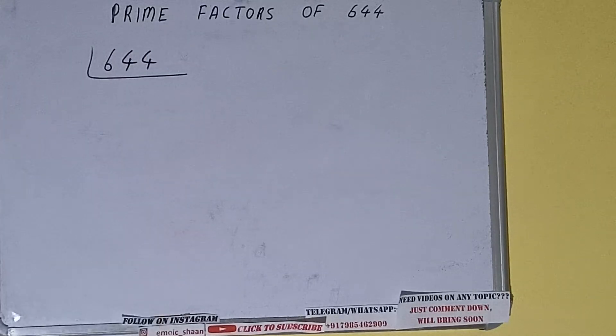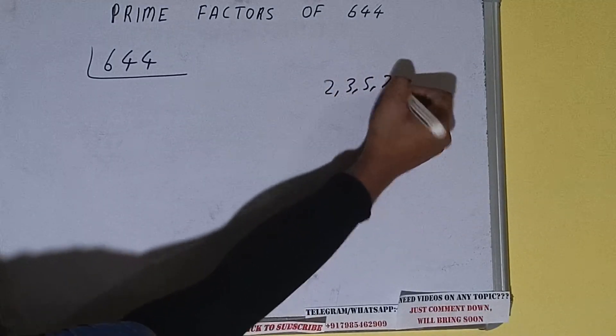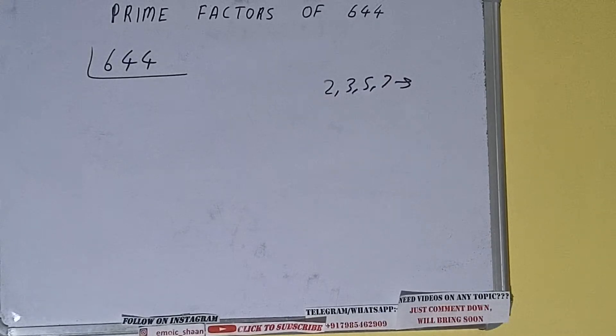Prime numbers are numbers that are divisible by one and the number itself, like 2, 3, 5, 7, and so on. We'll check with the lowest prime number we have, that is 2. Is the number 644 divisible by 2? Yes, it is because the number is even.